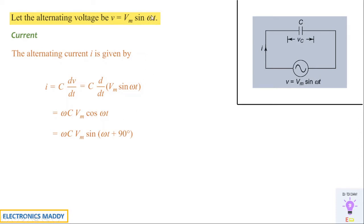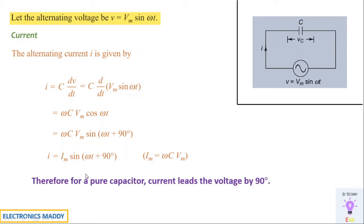Comparing i = Im sine(omega t + 90°), where Im = omega C Vm, with the voltage equation v = Vm sine omega t, it is clear that current i is leading the voltage by 90°. The positive sign in (omega t + 90°) confirms it is leading. Therefore, for a pure capacitor, current leads the voltage by 90°, whereas for an inductor, current lags behind the voltage by 90°.